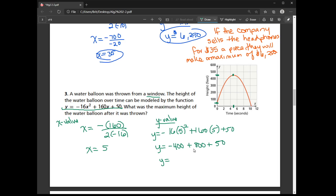And then plus 50. So negative 400 plus 800 is 400. And then an additional 50. So the maximum height of the water balloon is 450 feet.